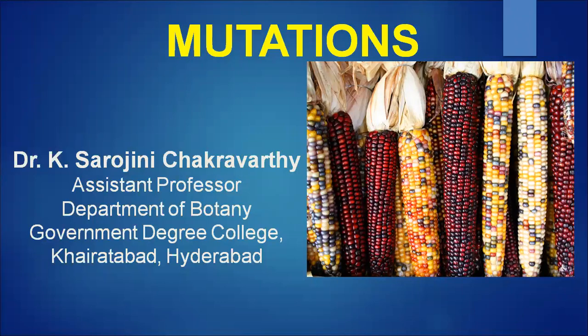After that we saw spontaneous mutations, which are of two types: chromosomal aberrations and gene mutations. In chromosomal aberrations, changes occur in the number of chromosomes or in the structure of chromosomes. Last class we covered structural changes, which occur in four ways: deletion, duplication, inversions, and translocations.